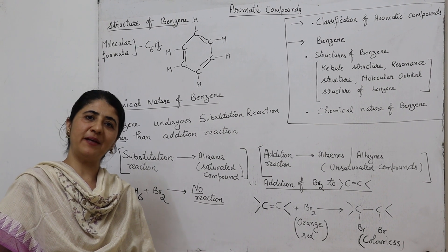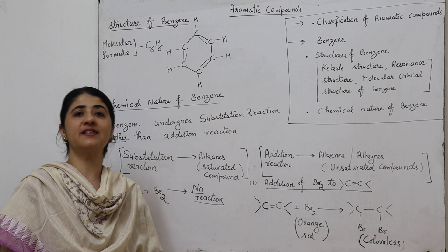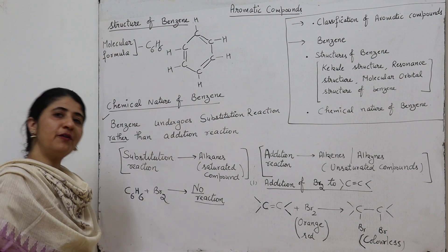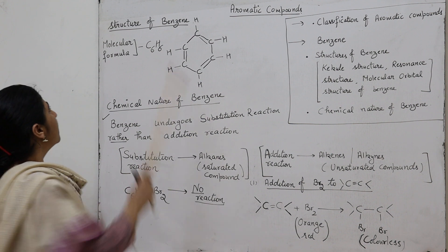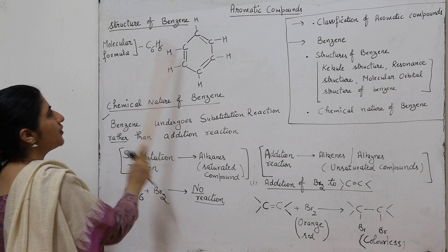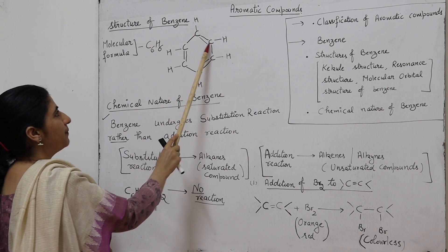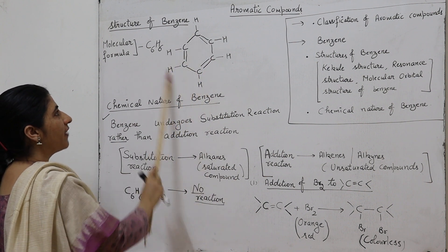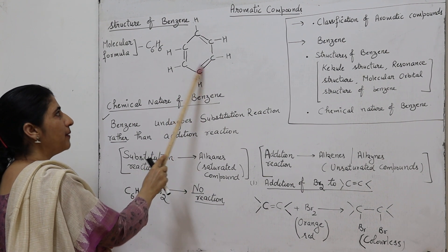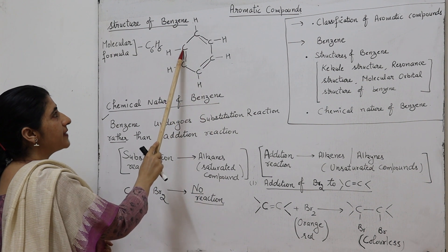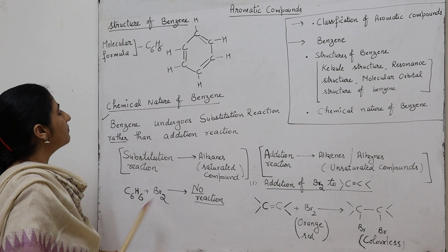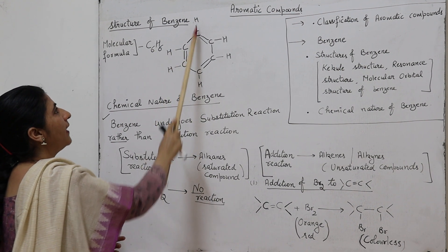The study of aromatic compounds must begin with the study of benzene, which is the most simplest aromatic compound. Benzene has the molecular formula C6H6. In the structure of benzene, the six carbon atoms are joined to each other in the form of a ring through alternating single and double bonds: double bond, single bond, again double bond, single bond — all six carbon atoms joined in a conjugated form. Each carbon has one hydrogen atom.